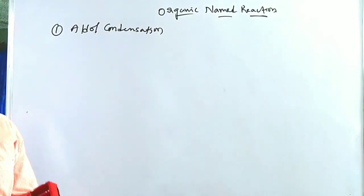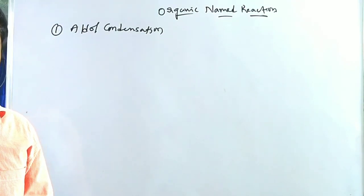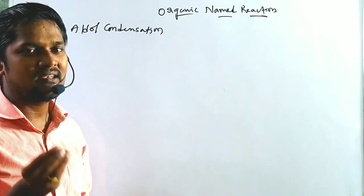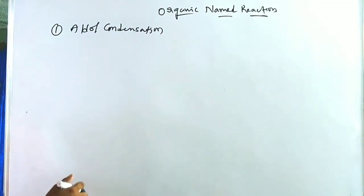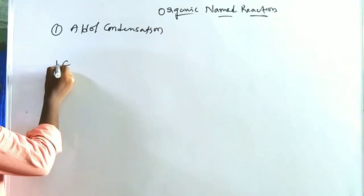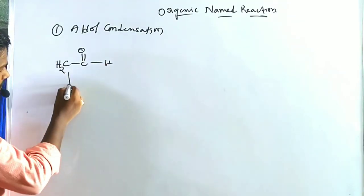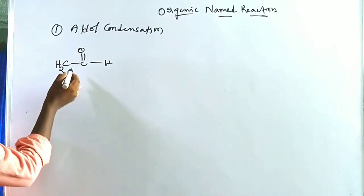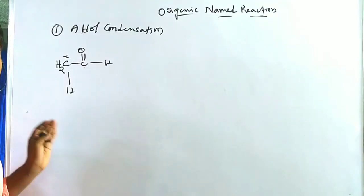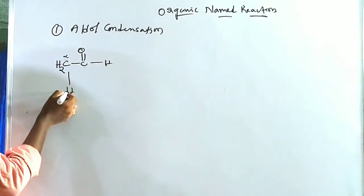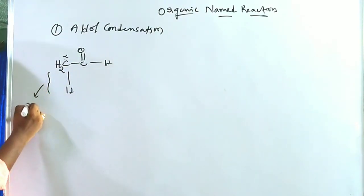Aldol condensation is nothing but: alpha hydrogen containing carbonyl compounds treated with a diluted base will give the aldol. The carbonyl compound's adjacent position is called alpha, then the next position is beta, and so on. The alpha C-H bond is more acidic in nature.